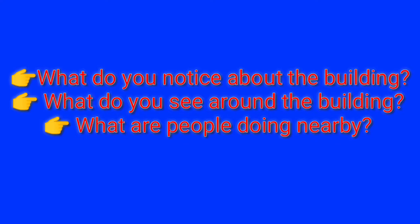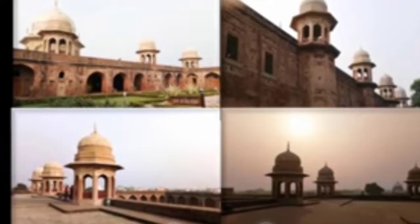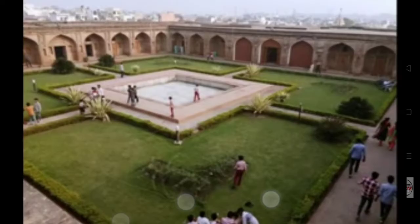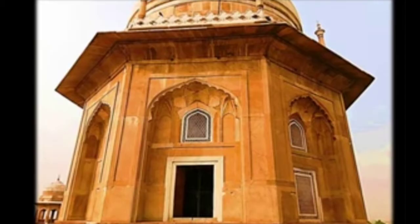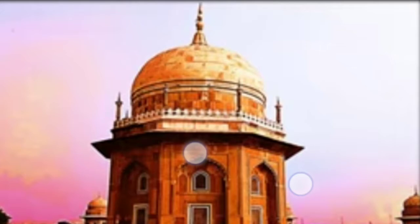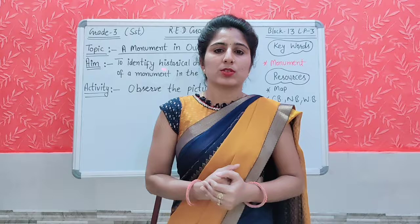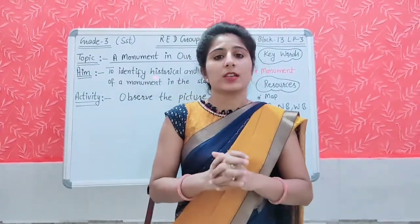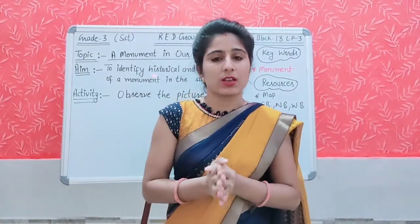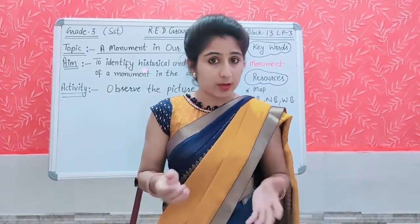Students, these are pictures of Sheikh Chilli ka Maqbara. Here you can see many domes and beautiful gardens. It is also called the Taj Mahal of Haryana. This monument is situated in Haryana, in Kurukshetra, near Thanesar. It is similar to Taj Mahal and it is very beautiful and very big. I hope you have all seen the beauty of this monument in the pictures.